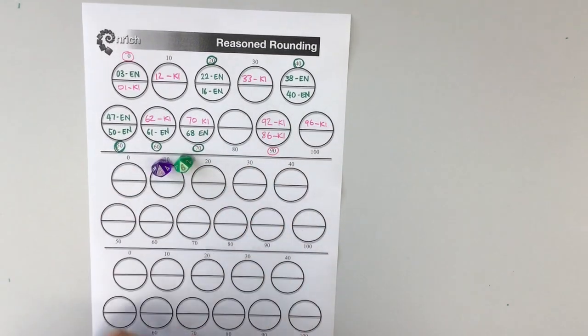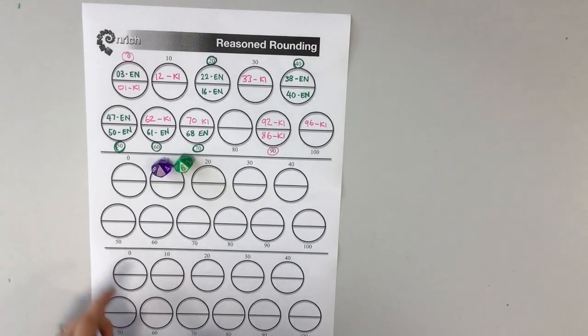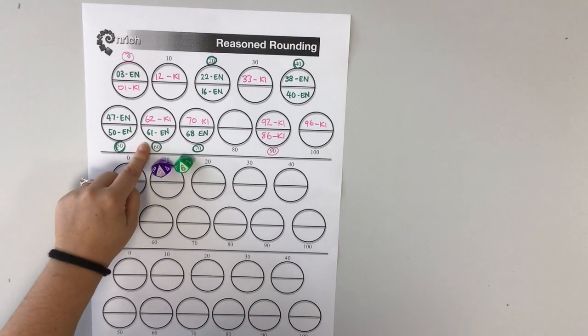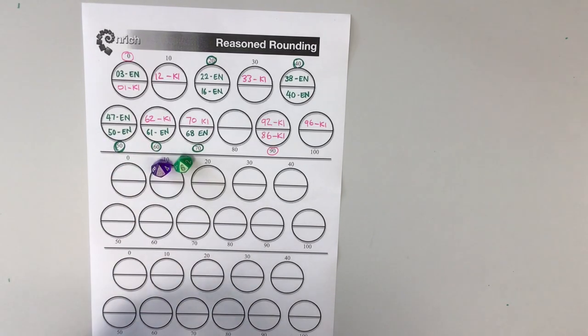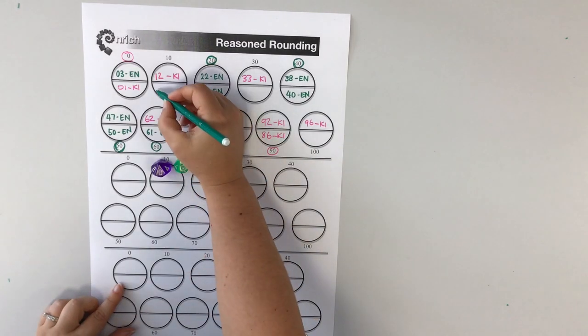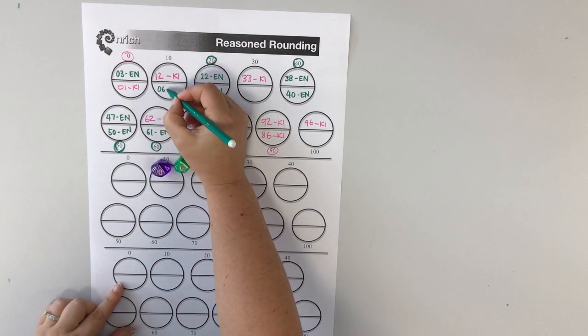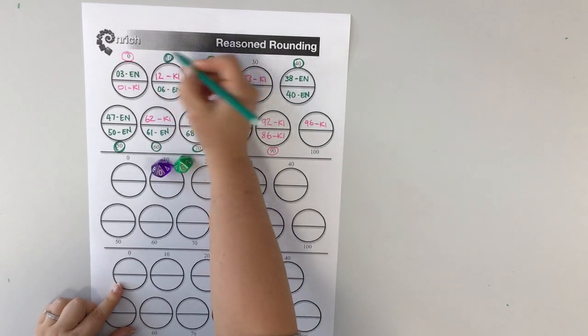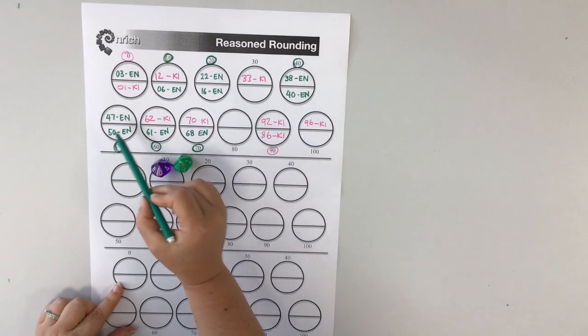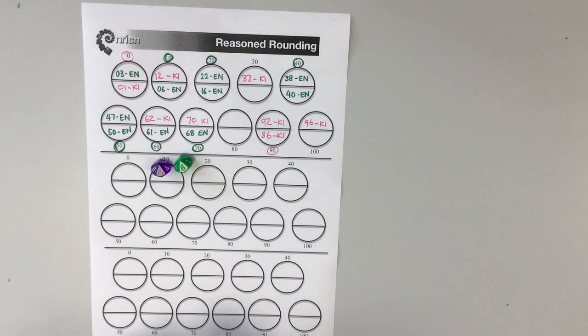So I have just rolled a 0 and a 6. Can't use it as the 60 because that circle is taken, but 6 as a single digit would round up to 10. So I'm going to be brutal here and snap up that final circle. So now you can see I've got 1, 2, 3, 4, 5, 6 out of the 11 circles. Miss Innes can't come back from that, so I would have won this game.